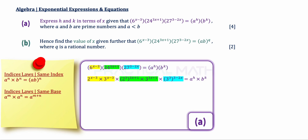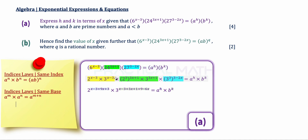With the same base rule: A to the power of M times A to the power of N gives A to the power of M plus N. Same base multiplied means the powers add. We can now merge all the base-2 terms. The power becomes x minus 3, plus 9x plus 3 — where 9x plus 3 comes from multiplying the power 3x plus 1 by 3.